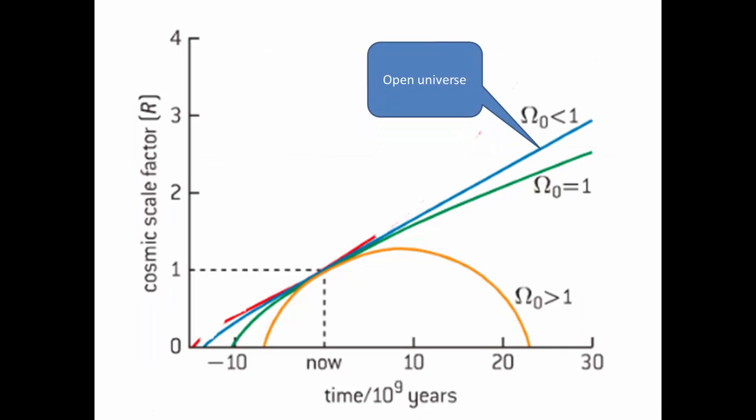We have an open universe. This is when the density of the universe is less than the critical density, which means the universe will keep on expanding forever. Another outcome would be the density of the universe is greater than the critical density, which means we have a closed universe, which means the universe expands and then contracts again and we have a big crunch.